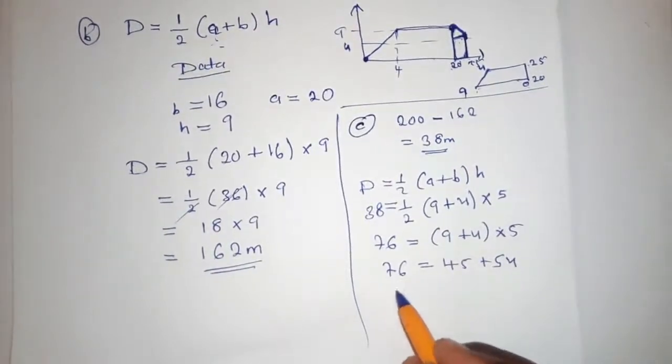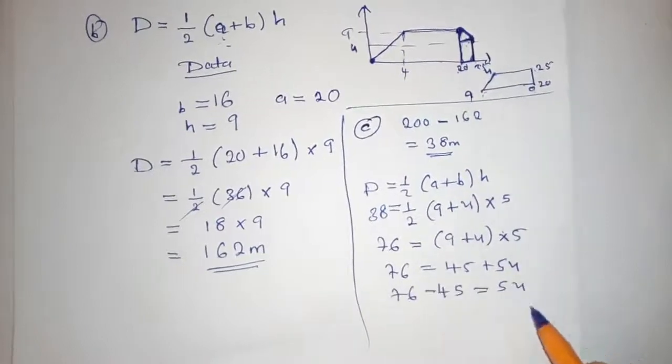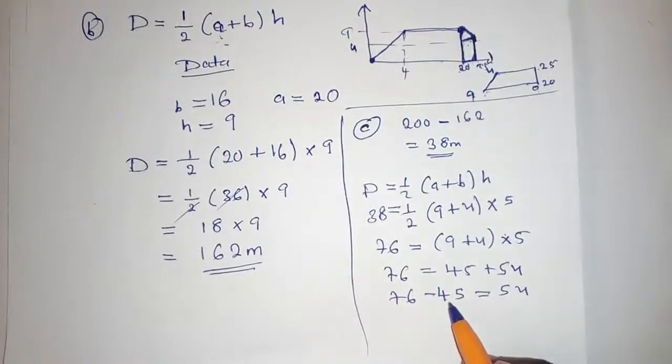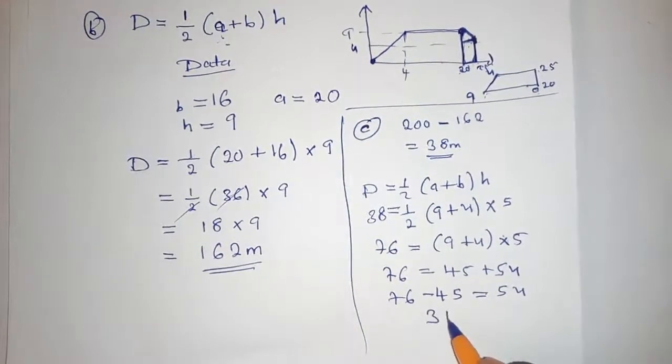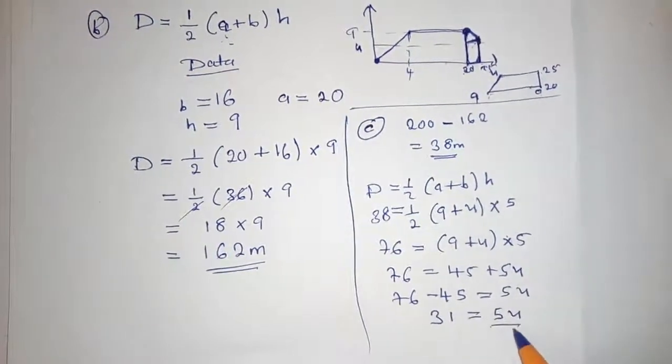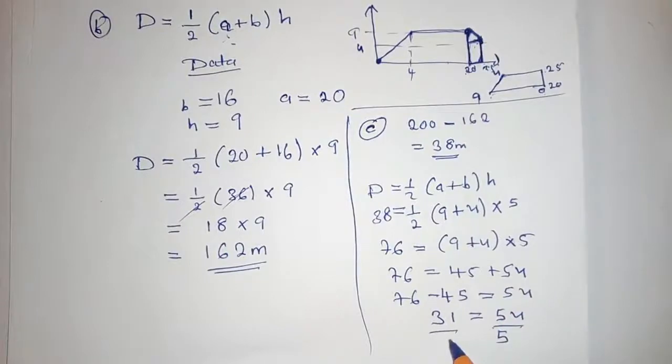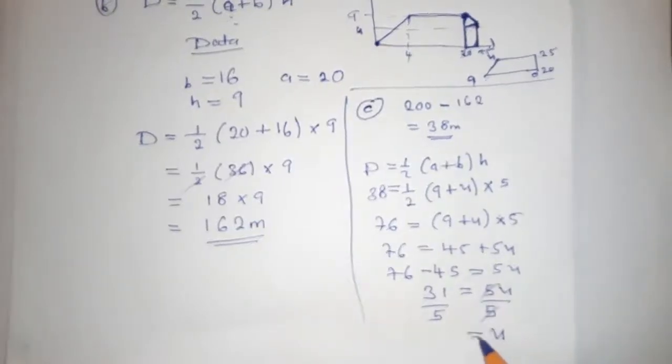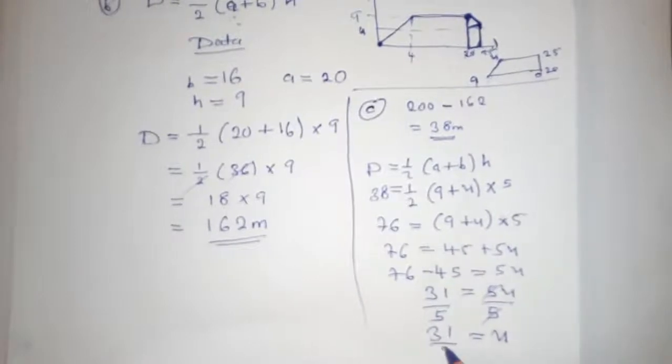We are solving for U. 5U equals 31. We divide by 5, divide by 5. U will be equal to 31 over 5.